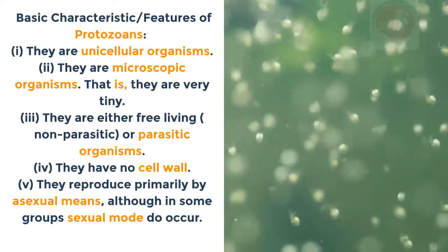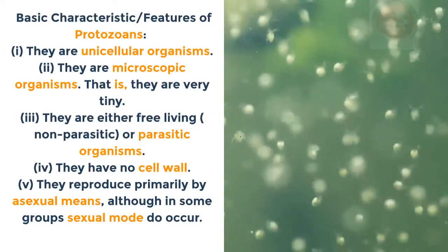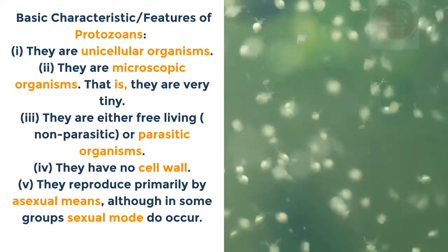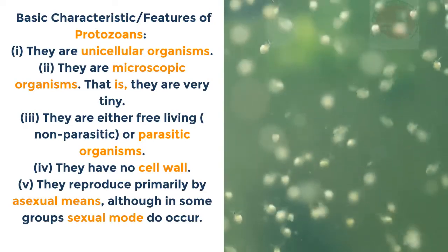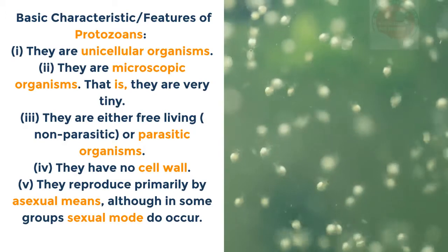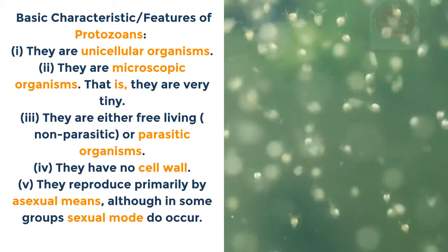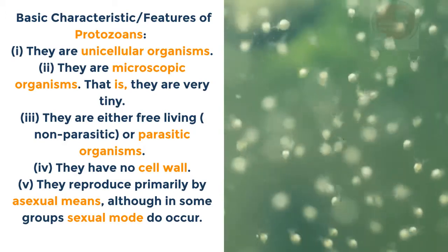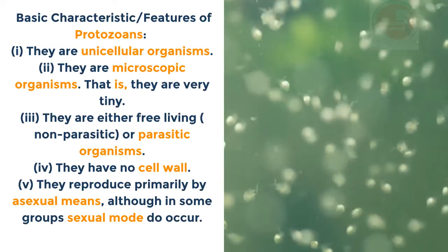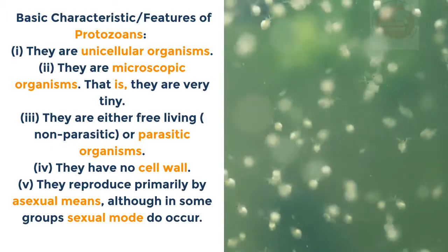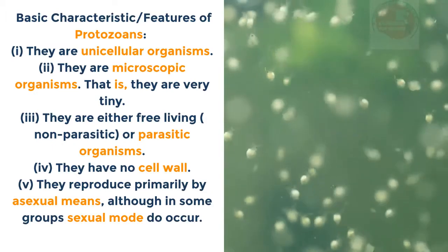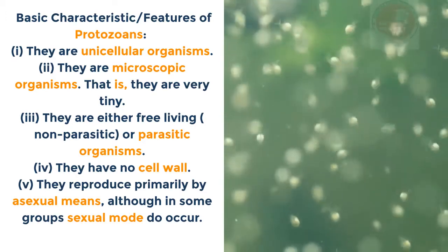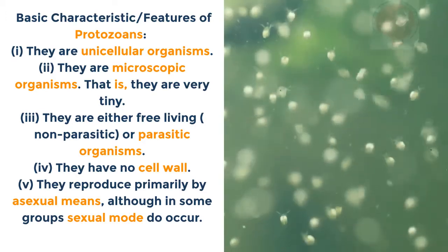Basic characteristics of Protozoans: i. They are unicellular organisms. ii. They are microscopic — very tiny. iii. They are either free-living (non-parasitic) or parasitic organisms. iv. They have no cell wall. v. They reproduce primarily by asexual means, although in some groups sexual reproduction does occur.